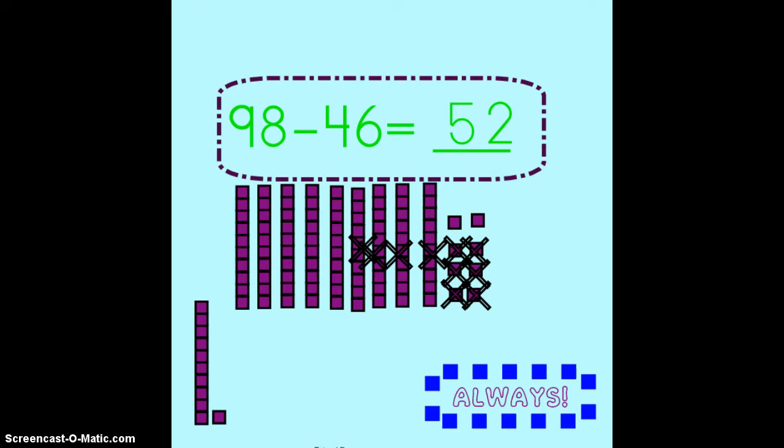Don't forget to always subtract the ones first and then subtract your tens place. In class tomorrow you can x out what you're taking away. You can erase on your whiteboard what you're taking away. Or if you're working with base ten blocks you can move what you're taking away out of the picture.